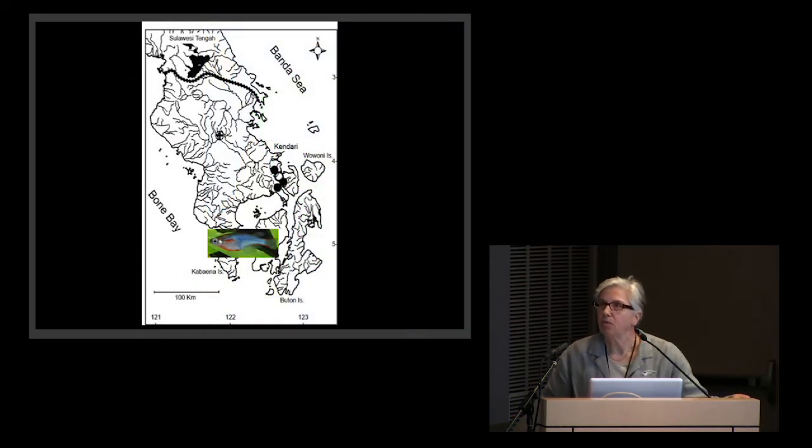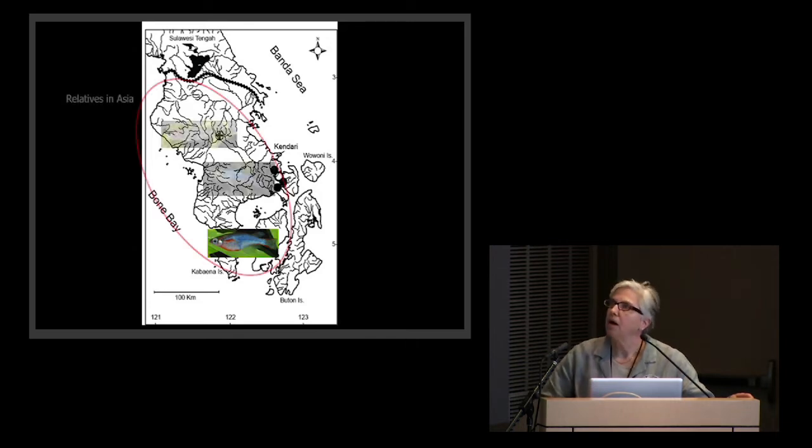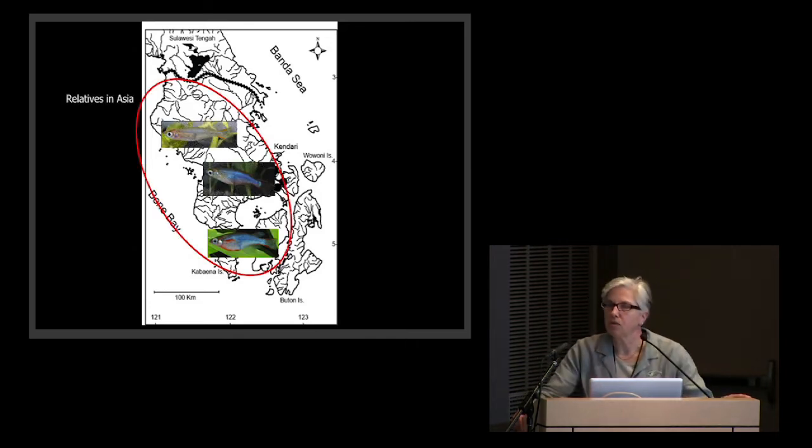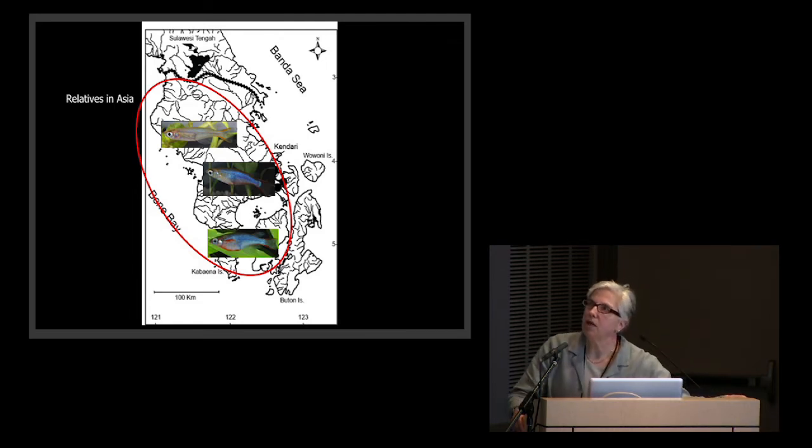So what we did was go to Sulawesi with the Indonesian field team. I went there in 2010. We were able to collect the endemic species in its type locality, its endemic area in Muna Island, and also were pleasantly surprised to realize that there was a larger group there. We discovered an endemic biota that was previously unknown, and these are some undescribed species which we will be describing. They have relatives in Asia, in the Asian continent.